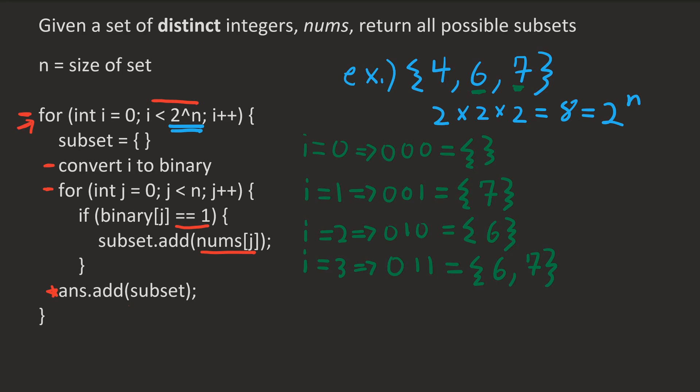Hopefully you can see where this is going. Finally, we go up to i equals 7. And remember, since we started at 0, we have a total of 2 to the n subsets even though we're only going up to i equals 2 to the n minus 1. So 7 is represented as 1,1,1, which tells us we want to include all three elements in our subset. At each step of i, we create the subset and add it to our solution set, and in the end we return all of these subsets as the answer.